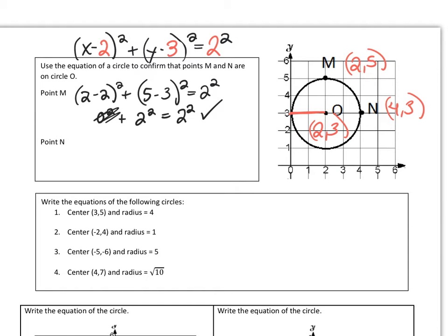This time, I'll be substituting (4, 3) into my equation for x and y. So I have 4 minus 2 squared plus 3 minus 3 squared equals 2 squared. Well, let's see. 4 minus 2 is 2 and 3 minus 3 is 0.